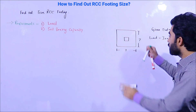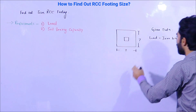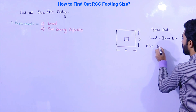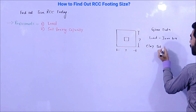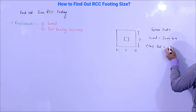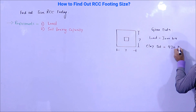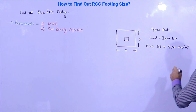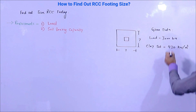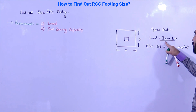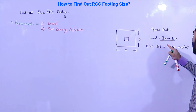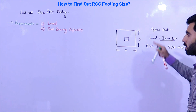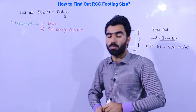And for the soil, the soil type here is clay soil. The clay soil bearing capacity is 430 kilonewtons per meter square. The load could be 4,000, 5,000, 2,000, or 1,500 kilonewtons — it depends on the structural load. So now, what is the specific formula to find out the size of this footing?